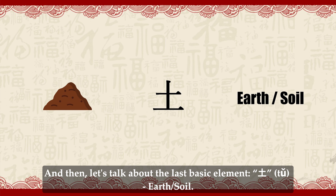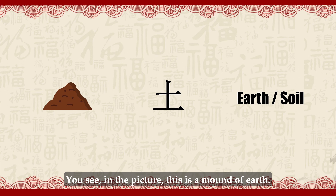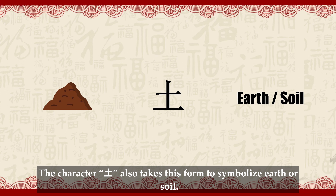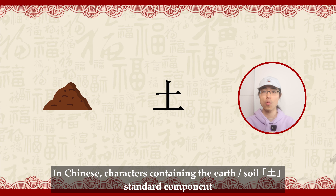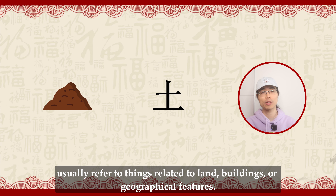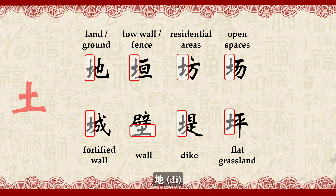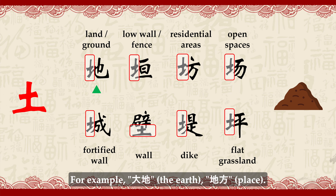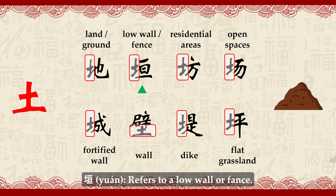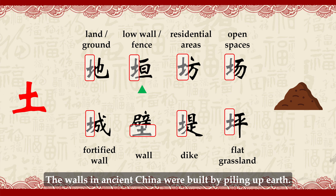Now let's talk about the last basic element: Tǔ (土), earth or soil. In this picture, you see a mound of earth — the character Tǔ also takes this form to symbolize earth or soil. The standard component for earth is the symbol Tǔ itself. Chinese characters containing this earth or soil standard component usually refer to things related to land, buildings, or geographical features. For example: Dì (地), referring to land or ground, as in Dàdì (the earth) or Dìfang (place).